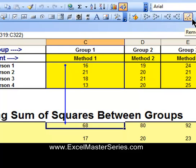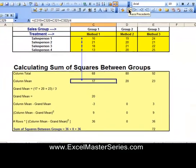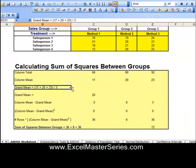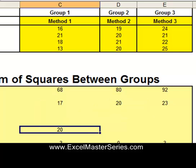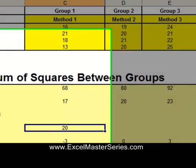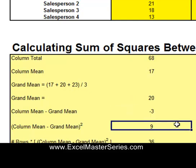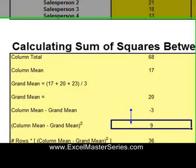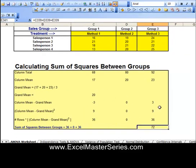I'm going to do these calculations for one column. The column mean is calculated by dividing the column total by the number of items in that column — in this case, 4, giving a column mean of 17. We then take the average of all the column totals to get the grand mean of 20. Next, we calculate the column mean minus the grand mean — so for this column, 17 minus 20 equals negative 3. We square that number: negative 3 squared is 9. Then we multiply by the number of rows: 9 times 4 rows equals 36. Doing this for each column and summing them up gives us 72.